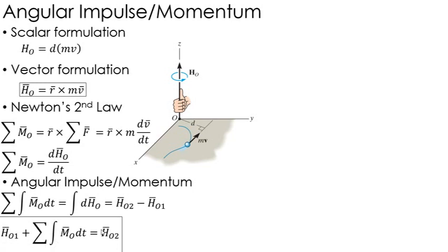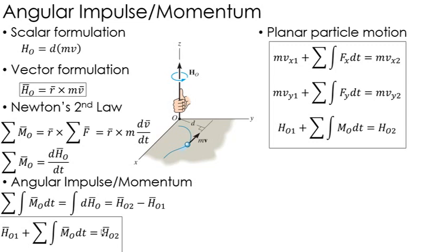So again, this is very similar to the linear equations. It's just in angular terms, R cross the linear equations. So for any given planar problem, I basically now have three momentum equations that I can apply.